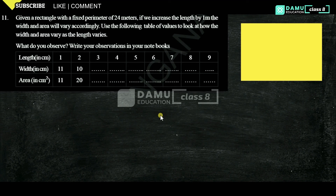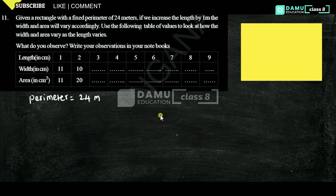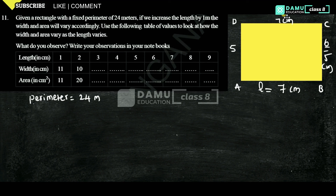The perimeter is 24 meters. If we increase the length by 1 meter, the width and area will vary accordingly. We use a table of values to observe how the width and area vary. Consider rectangle ABCD with length 7 meters and breadth 5 meters, giving a total perimeter of 7+7+5+5 equals 24 meters.